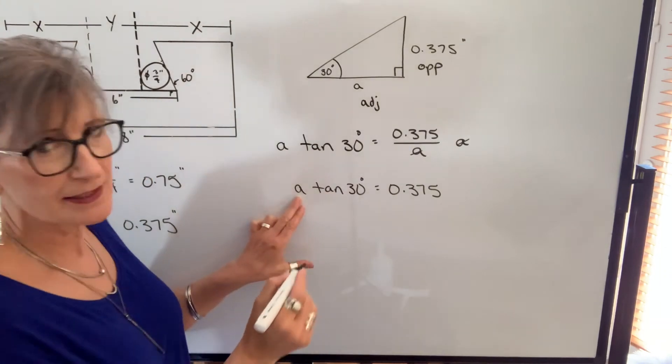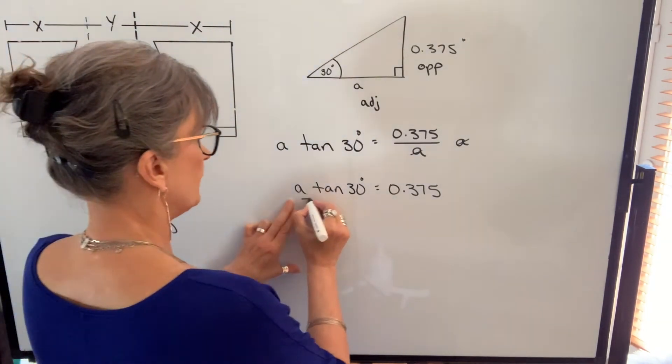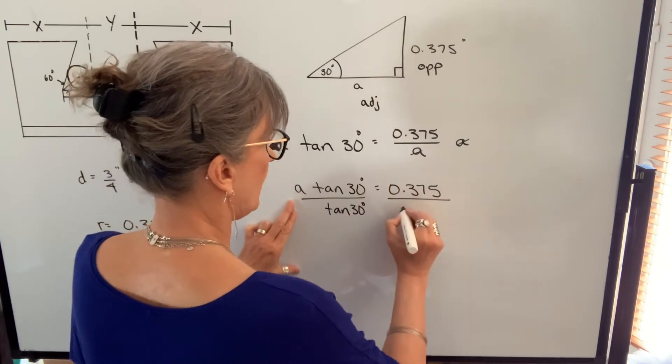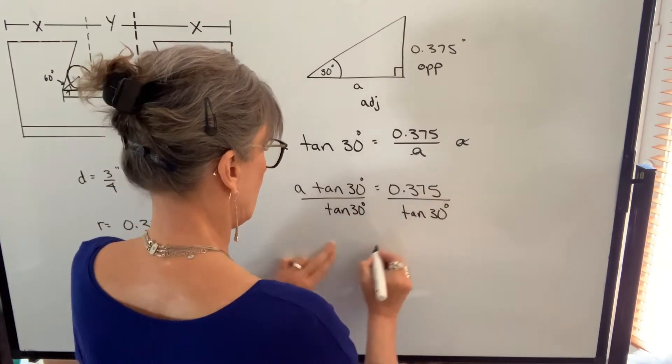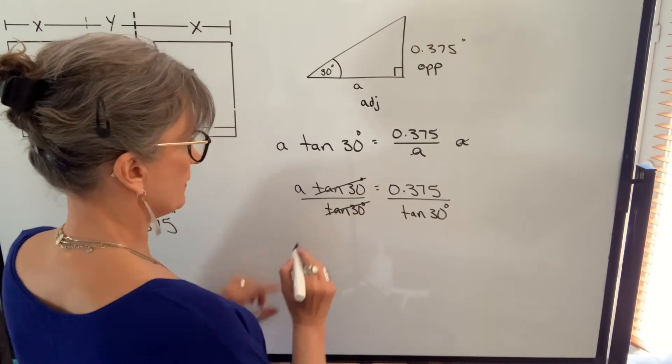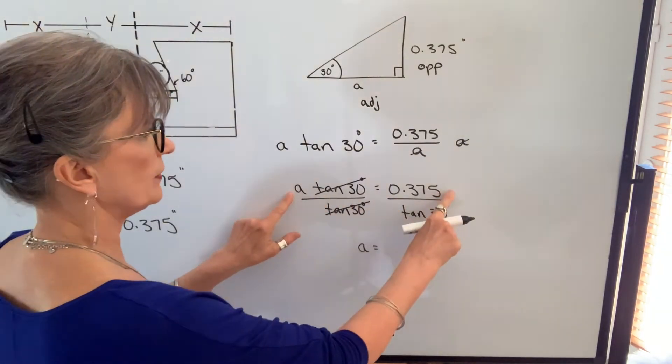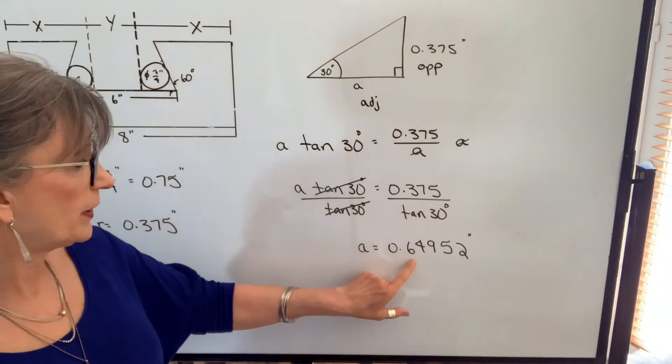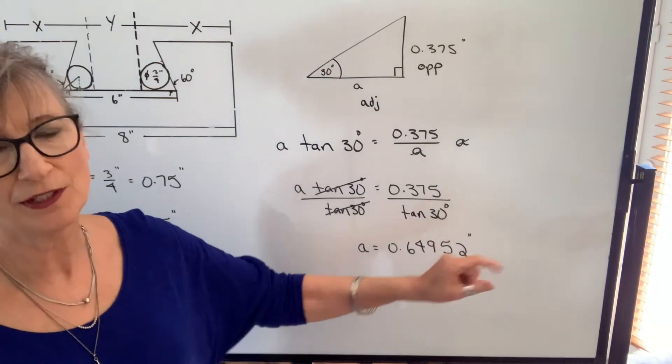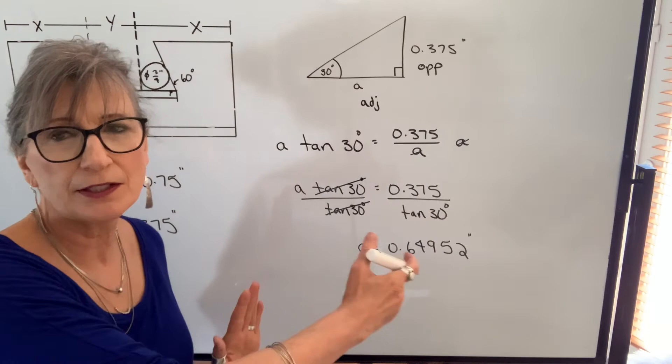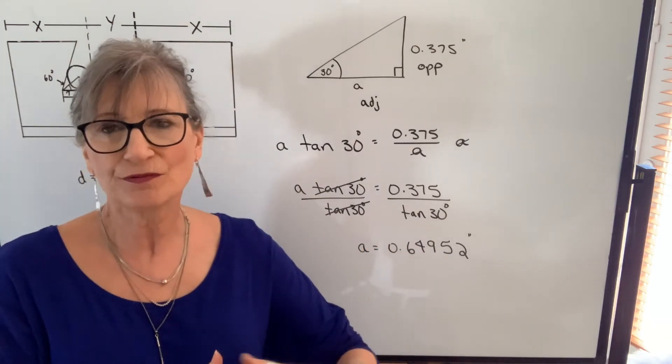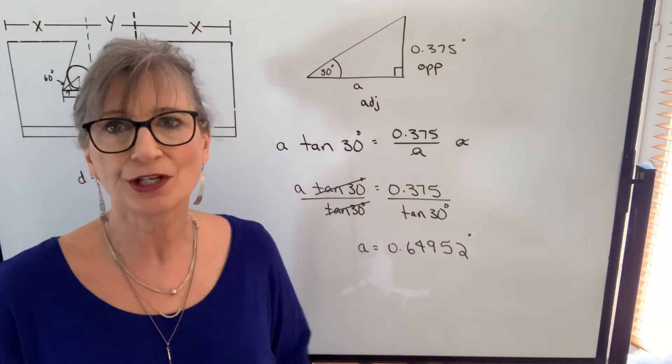Now I want to get A by itself. I want to isolate it. So I'm going to divide by tangent of 30 degrees. Whatever I do to one side, I have to do the same thing to the other side. Tangent of 30 degrees cancels. So A will be equal to 0.375 divided by the tangent of 30 degrees. And that works out to be 0.64952 inches. I'm going to keep it on my calculator because I'm going to continue using that value.